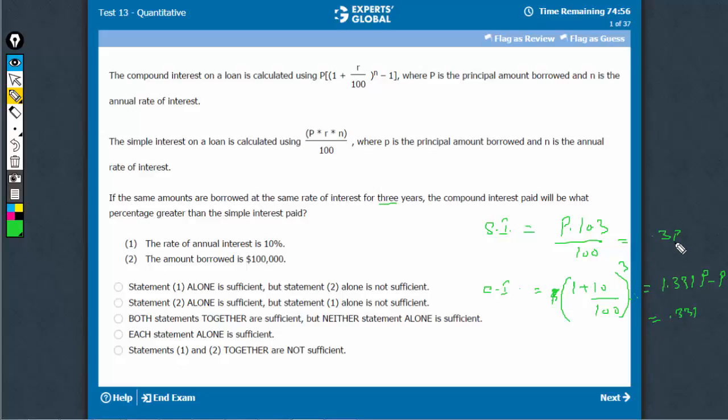Through simple interest, it is 0.3P. Through compound interest, it is 0.331P. The difference is 0.031P as a function of 0.3P. So, P's will get cancelled and you will be able to get some nice value of the quantity by which the compound interest is more than simple interest.